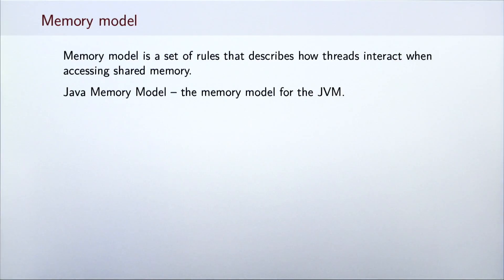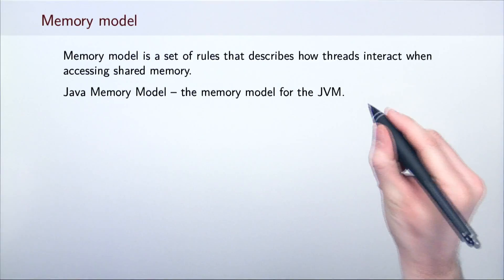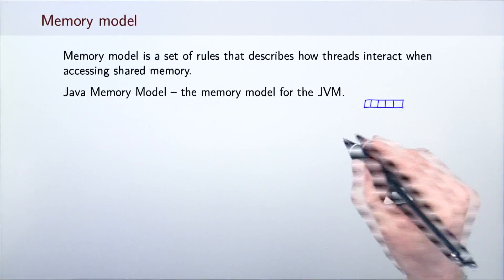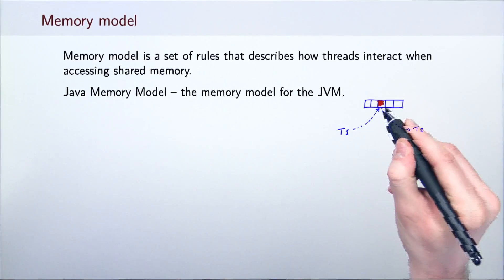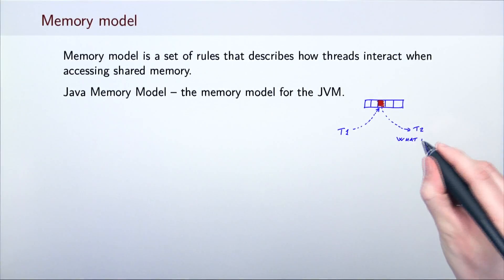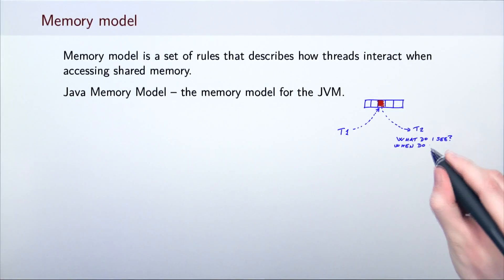The last topic that we will briefly visit in this lecture is the memory model. A memory model is a set of rules that describes how threads interact when accessing shared memory. It answers questions such as if some thread writes some value to a memory location, what are the preconditions that the other threads see the value that was written?